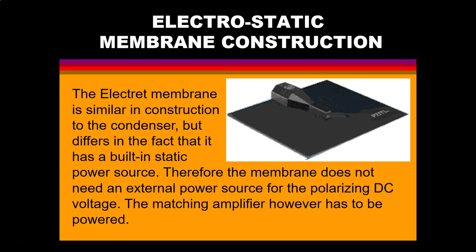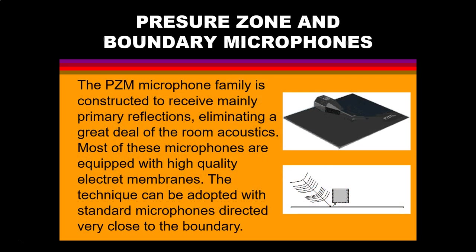The electret membrane is similar in construction to the condenser, but it has a built-in static power source. Therefore, the membrane does not need an external power supply for the polarizing DC voltage, though a matching amplifier still has to be powered. The PZM or pressure zone microphone family is constructed to receive mainly primary reflections, eliminating a great deal of room acoustics. Most of these microphones are equipped with high-quality electret membranes. The technique can also be adopted with standard microphones if they are placed very close to a boundary.